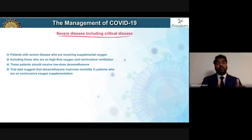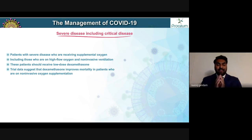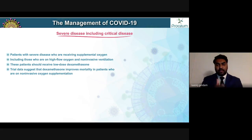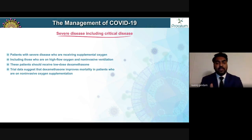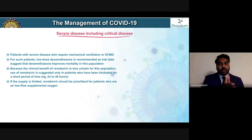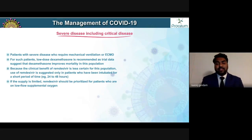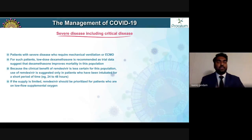For patients with severe disease receiving supplemental oxygen — on high-flow oxygen, BiPAP, or CPAP (non-invasive ventilation) — these patients should receive low-dose dexamethasone. Trial data has repeatedly demonstrated that dexamethasone improves mortality in patients on non-invasive oxygen supplementation. For patients requiring mechanical ventilation or ECMO, low-dose dexamethasone is also recommended, though the mortality benefit is less pronounced than in those not requiring invasive ventilation.